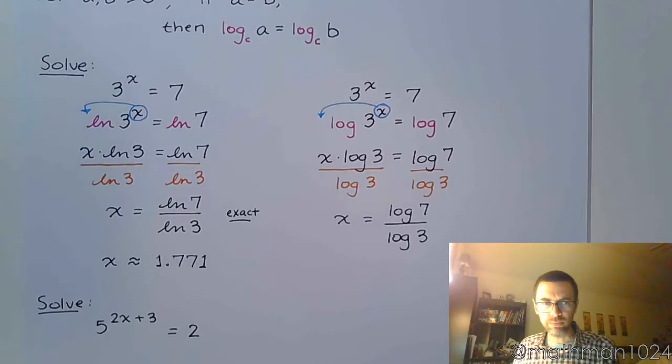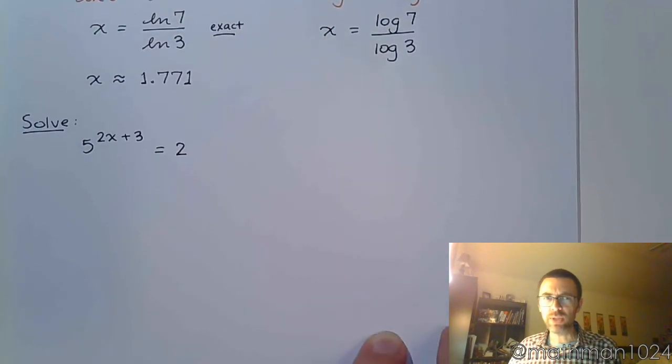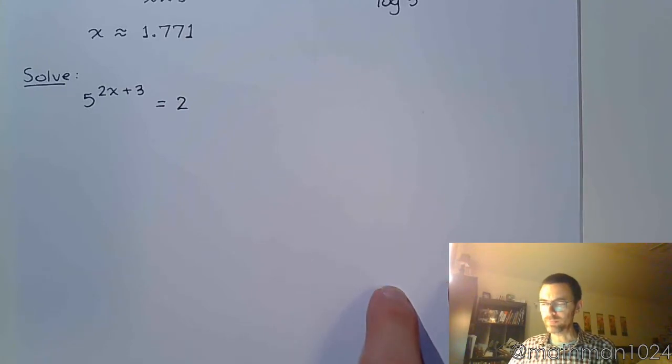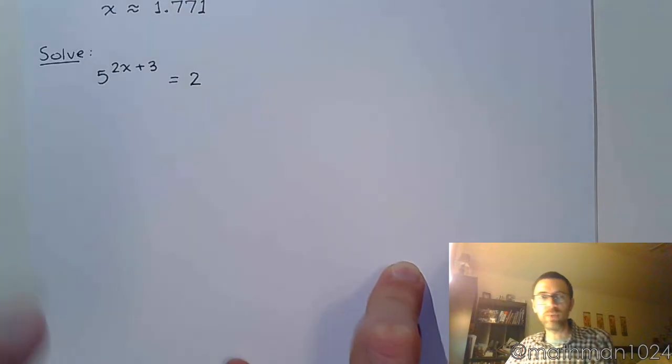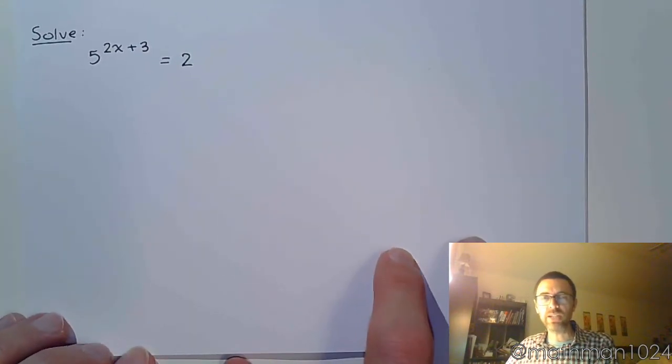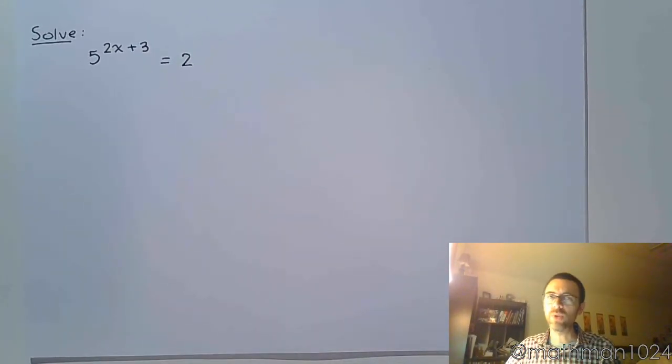Let's take a look at this next one. 5 to the 2x plus 3 is equal to 2. So to solve this one, it would be nice if we could rewrite each side to have the same base. But 5 and 2 don't have a common base.